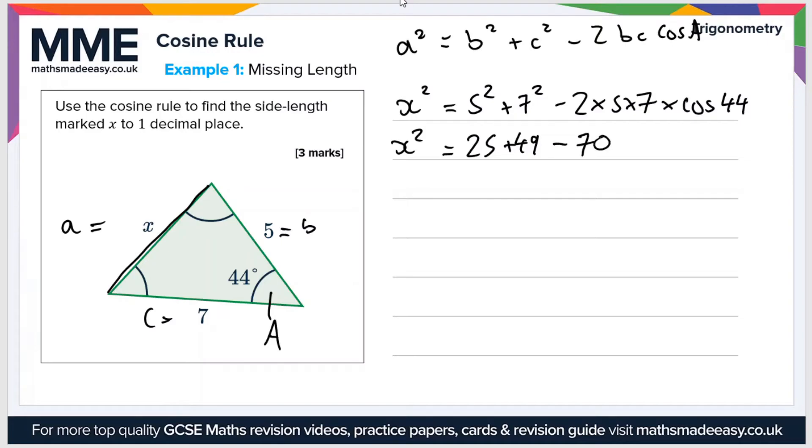So minus 70 cos 44. And if we simplify that a little bit further we get that is 74 minus 70 cos 44. So that's x squared.